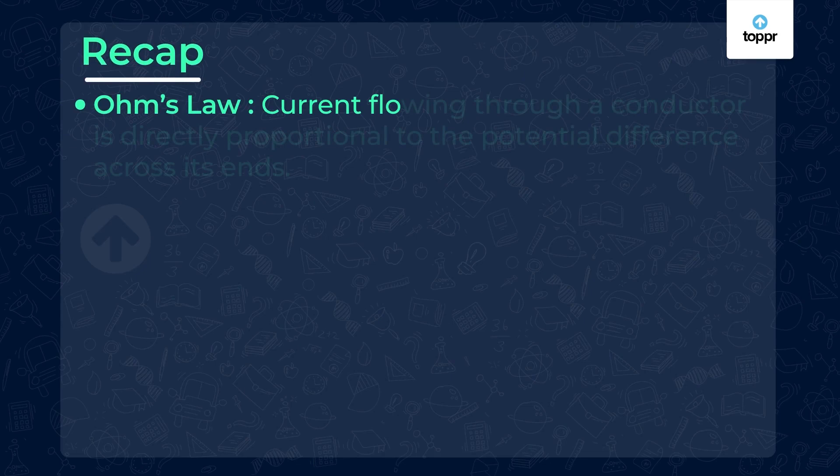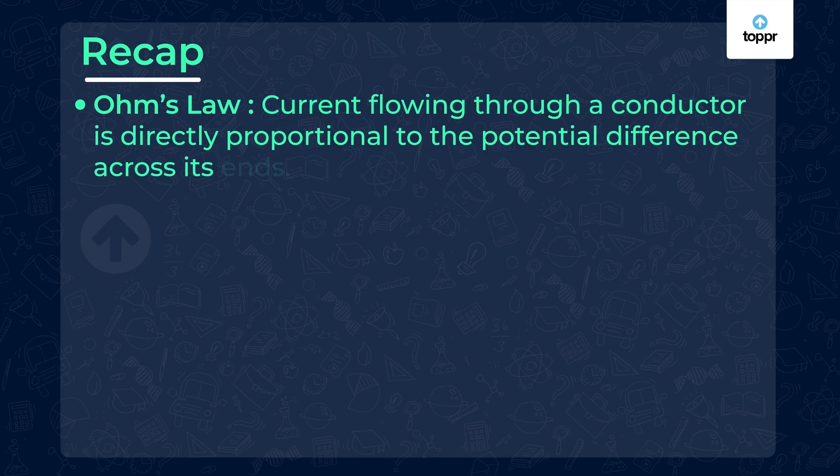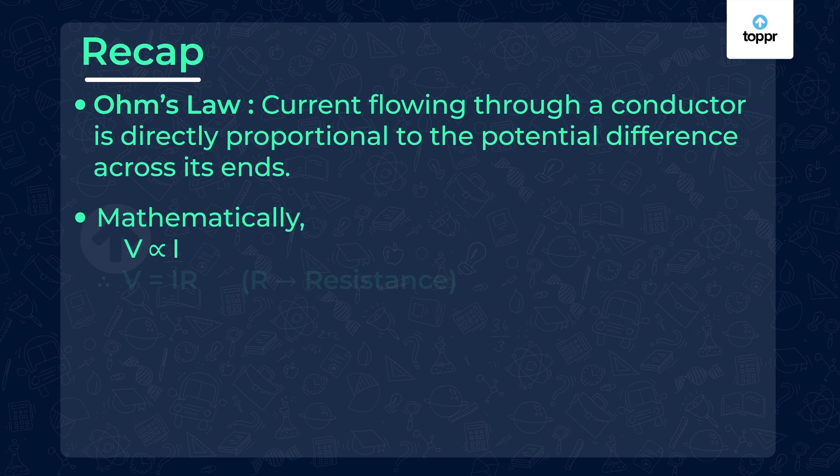Now, let's recap what we've learned in this lesson. Ohm's law states that current flowing through a conductor is directly proportional to the potential difference across its ends. Mathematically, V is proportional to I.